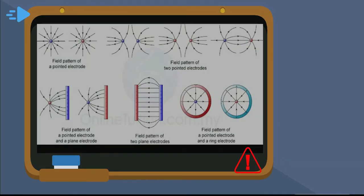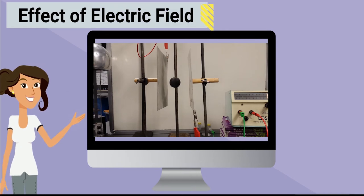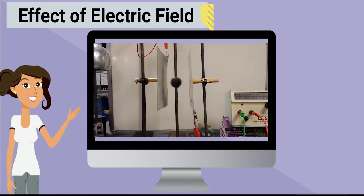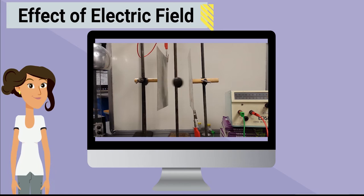The figure shows a few examples of the field patterns that you need to know in the SPM syllabus. A ping pong ball coated with a conducting material is hung by a nylon thread. When the ping pong ball is placed in between two plates connected to an extra-high tension power supply, opposite charges are induced on the surface of the ball. The ball will remain stationary because the force exerted on the ball by the positive plate is equal to the force exerted on it by the negative plate.